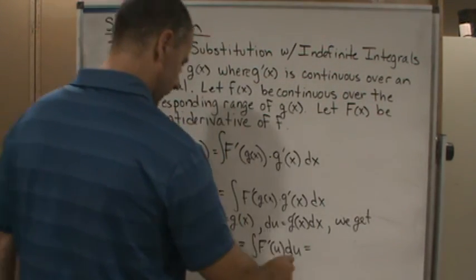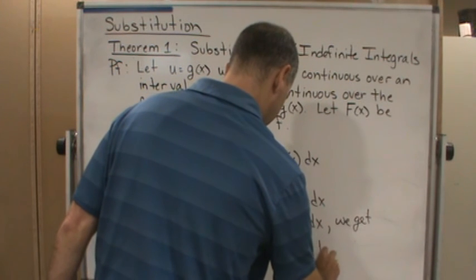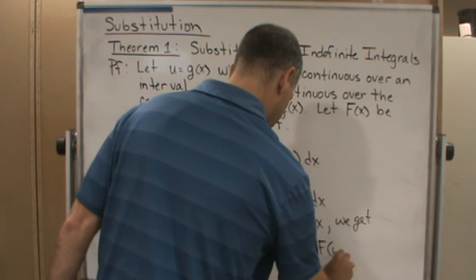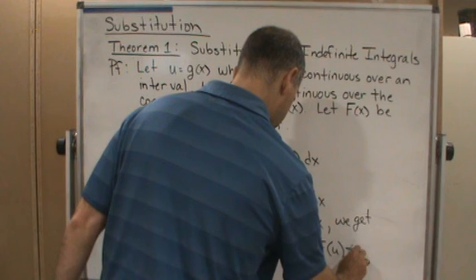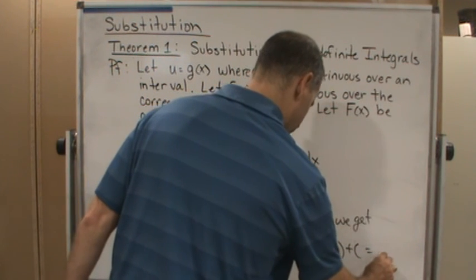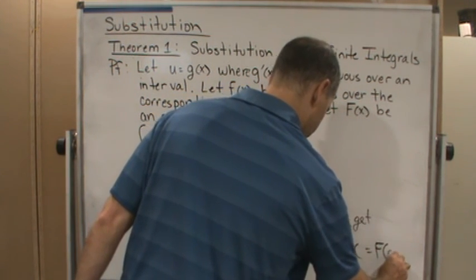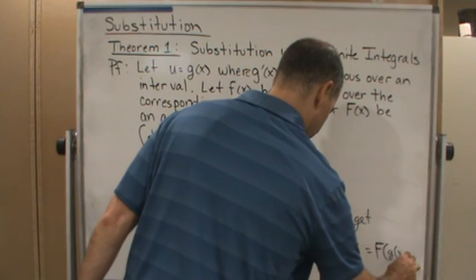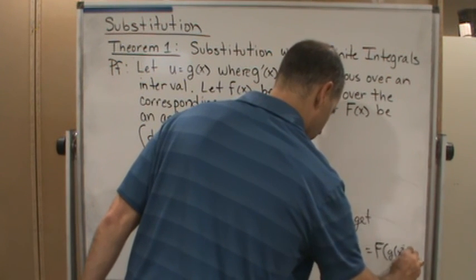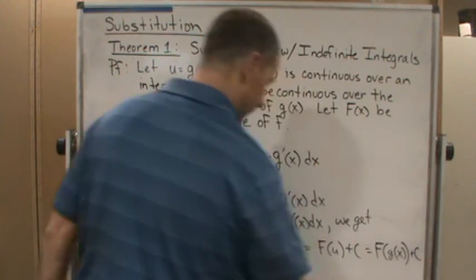So we're going to get, this is going to be equal to F of u plus c, which is equal to F of g of x plus c.